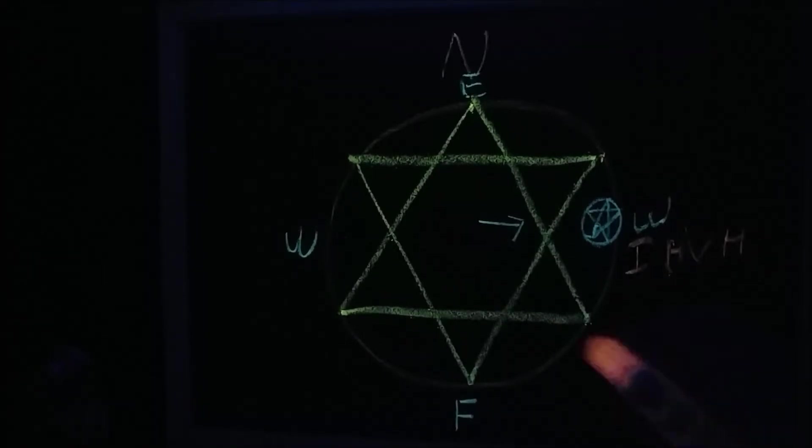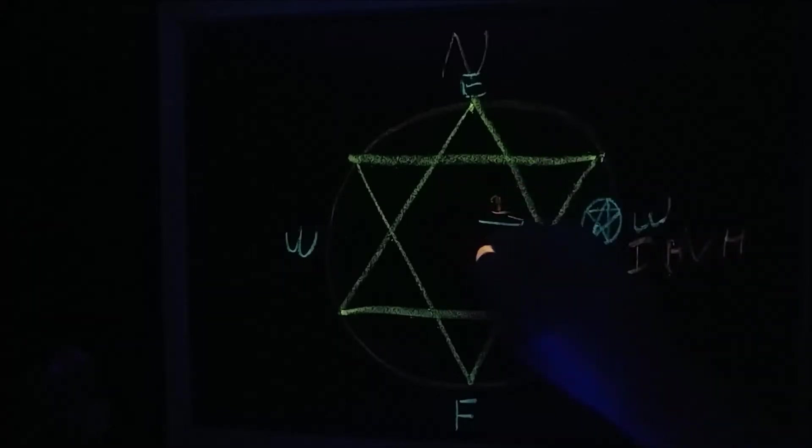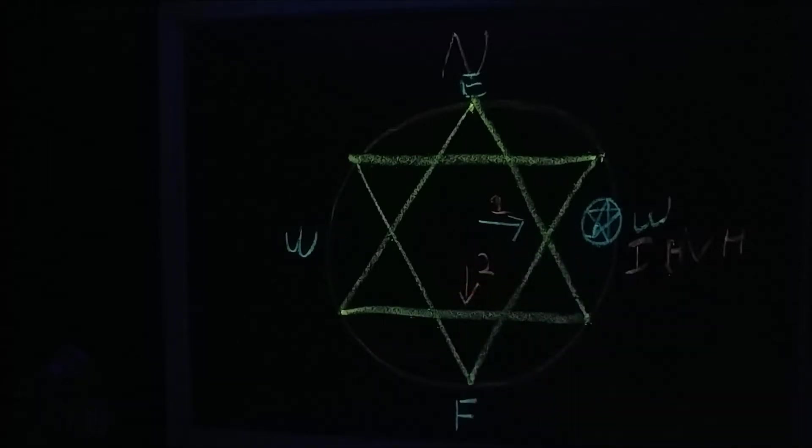All right. Then you'll turn to the south. So, that's number one. Number two. You're facing south. Same thing. You want to do the pentagram in the air with the circle.